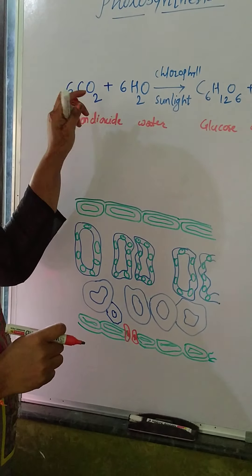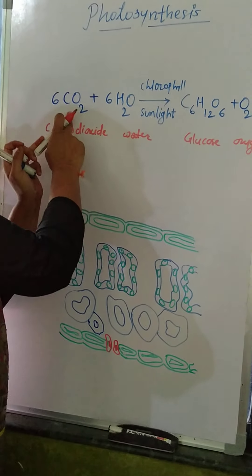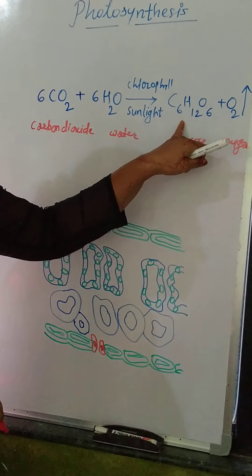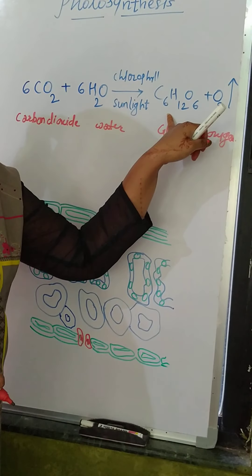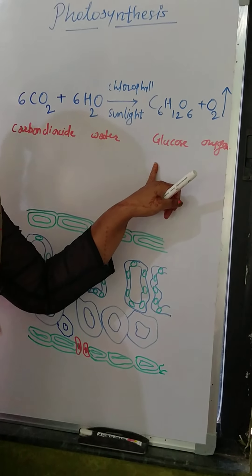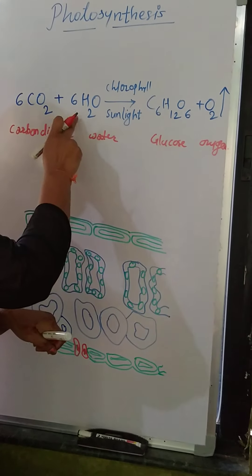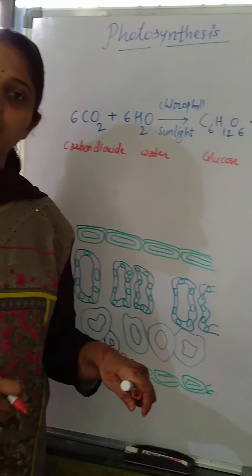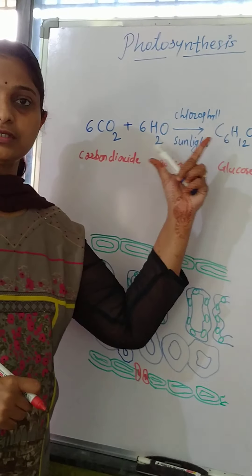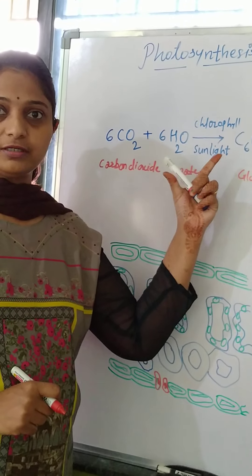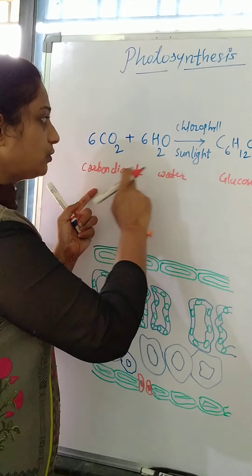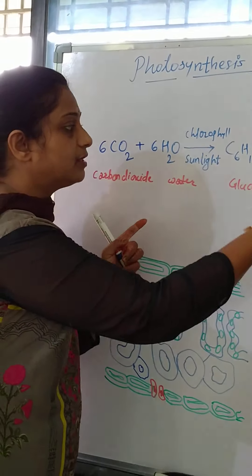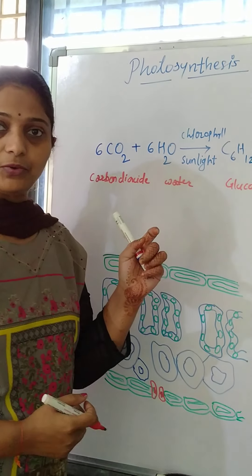Now what happens? Because this carbon dioxide is broken down — it splits into the carbohydrate, into the glucose. In the same way, water is split up into oxygen and hydrogen. So in this way this chemical reaction takes place. This solar energy is trapped by the plant and it converts into the carbohydrate.